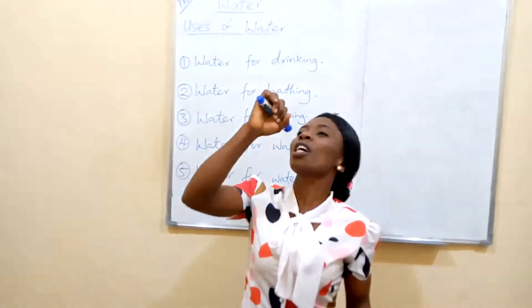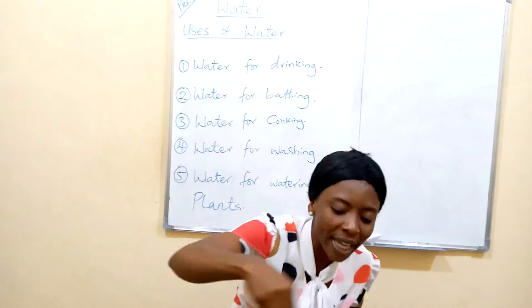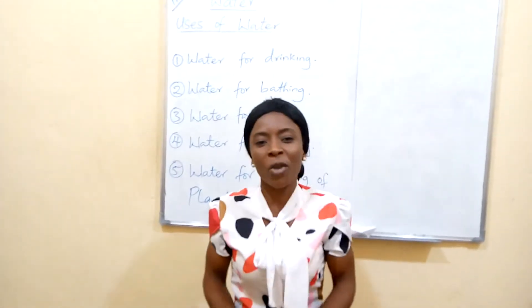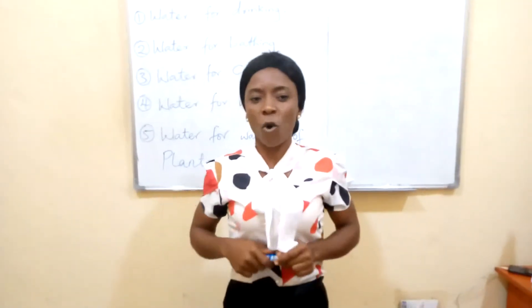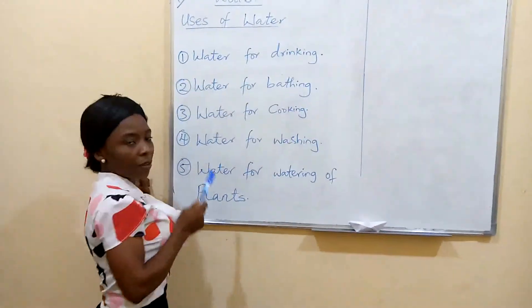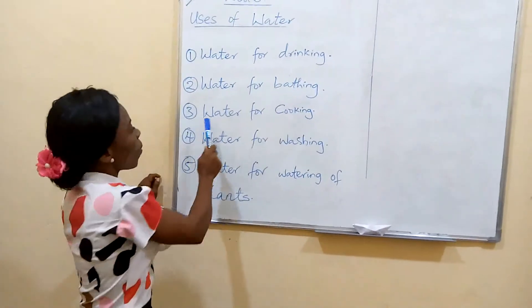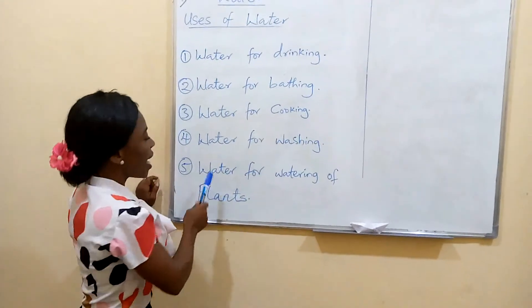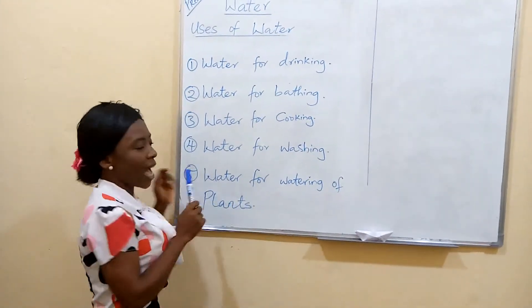And when mommy wants to wash your clothes, she uses water to wash. So we use water for drinking, we use water for cooking, we use water for washing, we use water for bathing. So what are the uses of water? Water for drinking, water for bathing, water for cooking, water for washing, water for watering of plants.